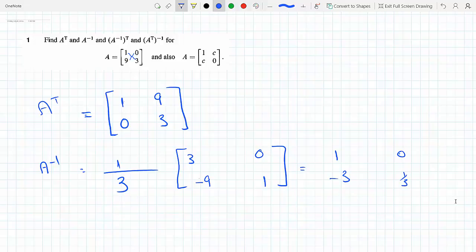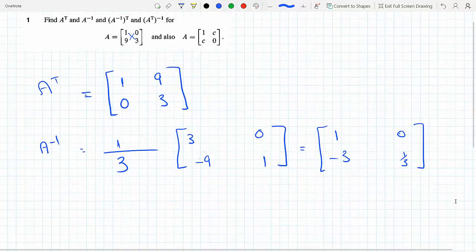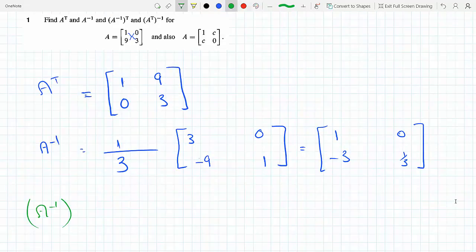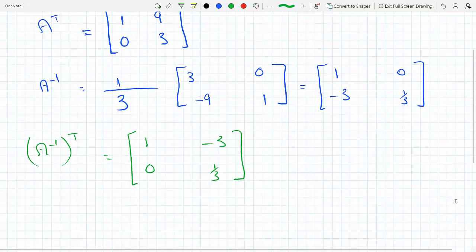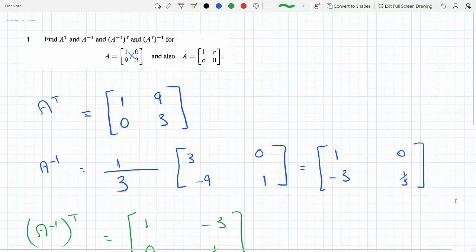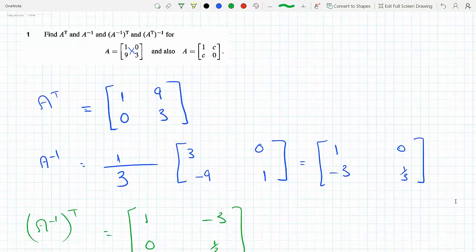Now (A inverse) transpose—so that means I take the A inverse and I transpose it again. The row becomes a column, so the first row becomes the first column, the second row becomes the second column. And so this is (A inverse) transpose.